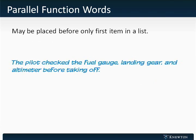Another way to achieve parallel function words is to put the function word only before the first item in the list, such as in this sentence: The pilot checked the fuel gauge, landing gear, and altimeter before taking off. In this case, the function word — the article "the" — is only before the first item in the list and not any subsequent ones. This, too, is a correct way to write a sentence.